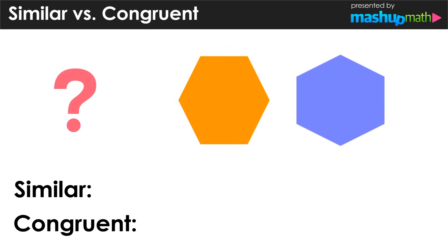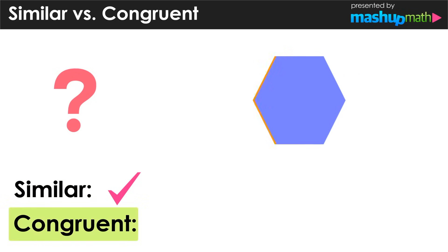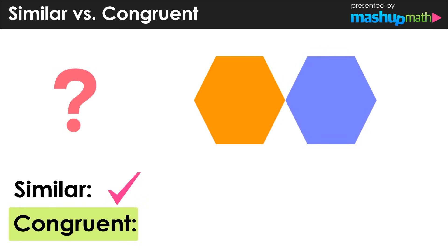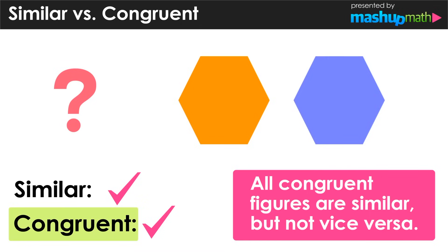Looking at two more figures, we change the orientation so they are both facing the same direction, which helps us see that yes, they are the same shape — both regular hexagons. By overlapping the two figures, we can also see that they are identical in size. So this pair is both similar and congruent, which leads us to the conclusion that all congruent figures are similar, but not all similar figures are congruent.